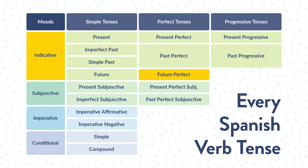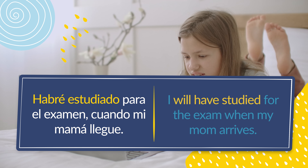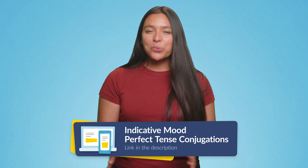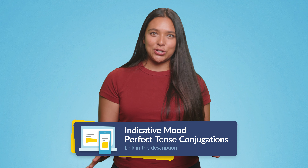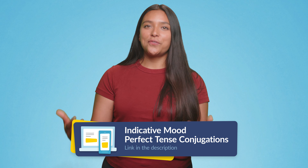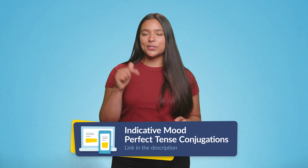Finally, the future perfect tense within the indicative mood is only used when talking about future events that will take place before another future action. These are things that haven't happened yet, but we are very sure that they will happen. Here's an example: Habré estudiado para el examen cuando mi mamá llegue — I will have studied for the exam when my mom arrives. We've got a chart on all the conjugations of ir and comprar in the perfect tense for the past, present, and future, which you can find in the full guide linked in the video's description below.